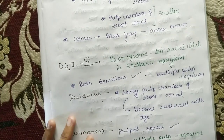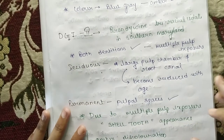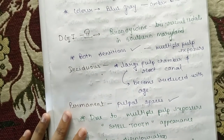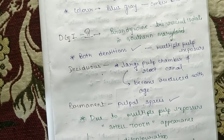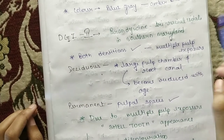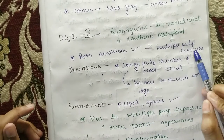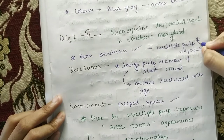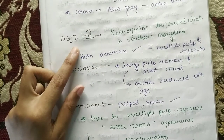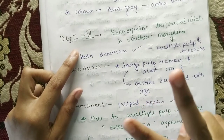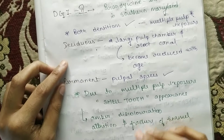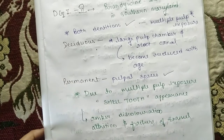Now, dentinogenesis imperfecta type 2 — we have studied the Brandywine tri-racial isolate in southern Maryland; we have seen the first case. We have two dentitions to consider. Multiple pulp exposure is the main characteristic of dentinogenesis imperfecta type 2. Now we will see deciduous and permanent teeth.